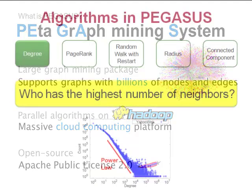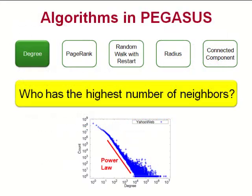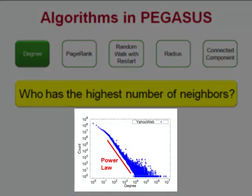Pegasus supports five important graph mining algorithms. The degree algorithm computes the degrees, or number of neighbors, of all nodes in a graph, and shows their distribution on a plot that lets you quickly identify the popular nodes, patterns, and anomalies. For example, the distribution of many real-world graphs follow the power law, meaning the number of nodes having a certain degree varies as the power of the degree, which can be fitted with a straight line when plotted on log-log scale.